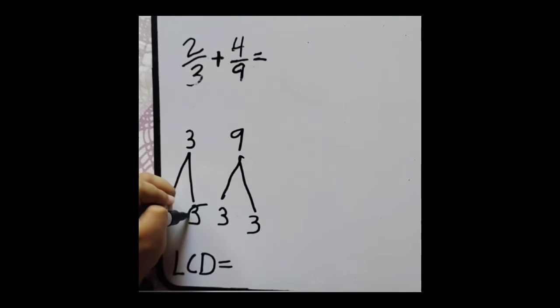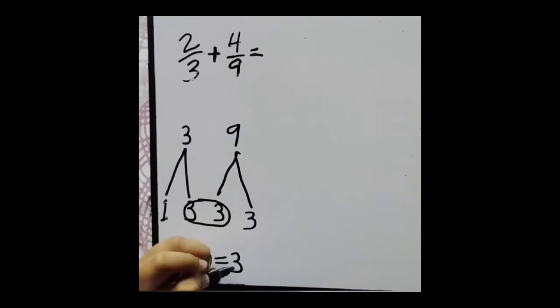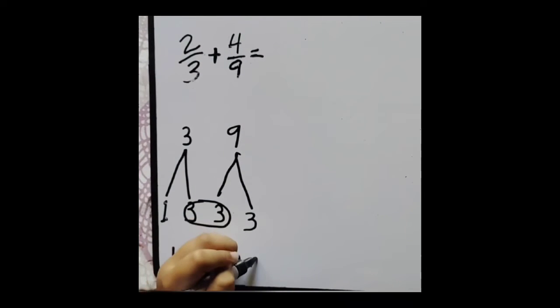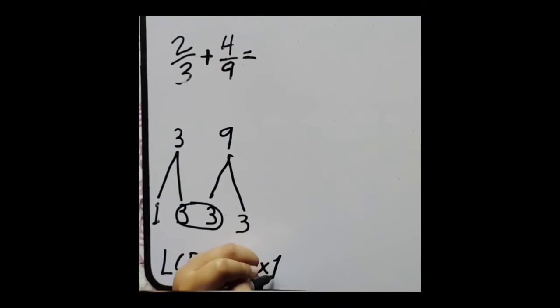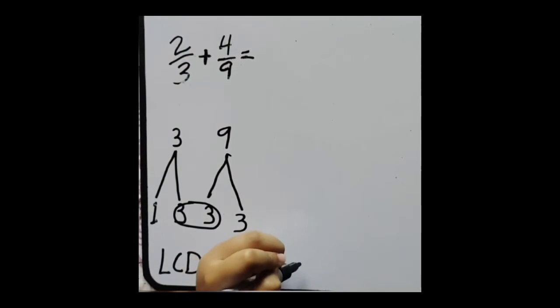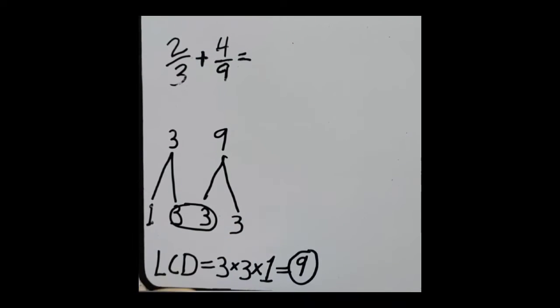Since ang 3 ay common factors ng 3 and 9, isusulat natin dito sa iba ba ang 3. Multiply by 3 and multiply by 1 is equal to 9. Kaya 9 yung gagamitin natin yung denominator.